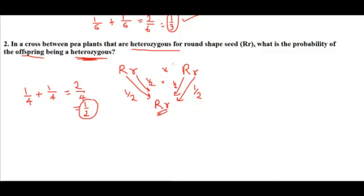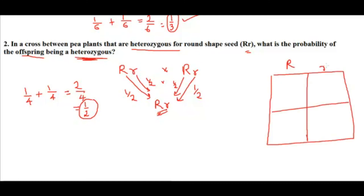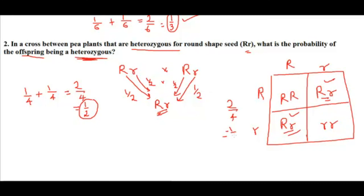Let's verify with a Punnett square. Both parents are Rr. The possible combinations are RR, Rr, Rr, rr — two out of four are Rr (heterozygous), giving a probability of one by two. This matches what we calculated using the addition rule.